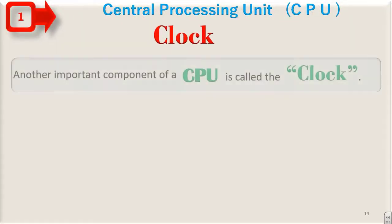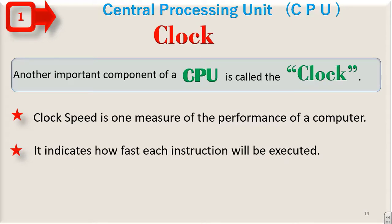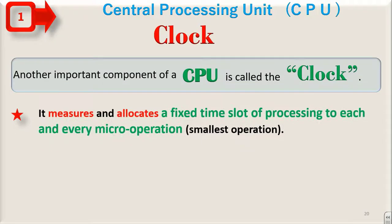The CPU clock. Another important component of a CPU is called the clock. Clock speed is one measure of the performance of a computer. It indicates how fast each instruction will be executed. Every computer contains an internal clock. This clock measures and allocates a fixed time slot of processing to each and every micro operation, i.e. the smallest operation.